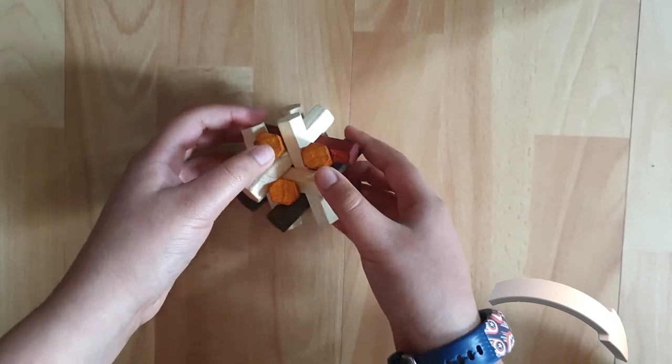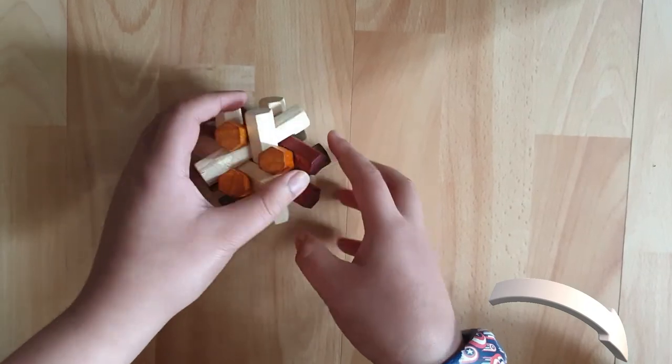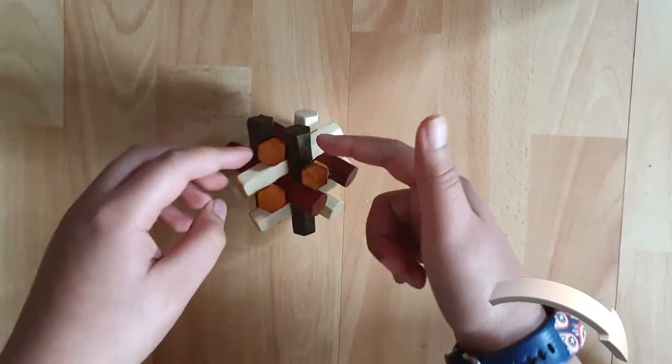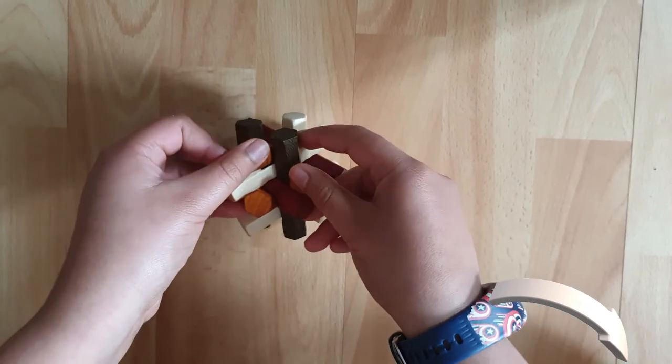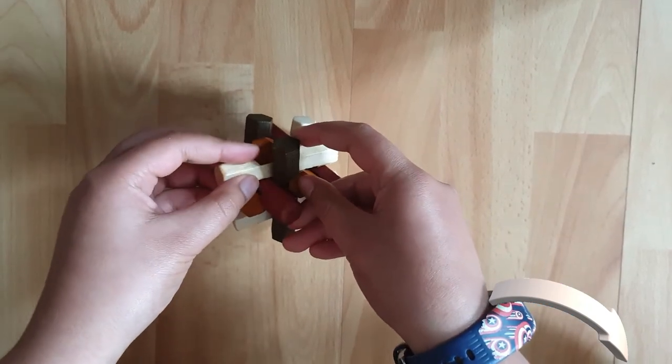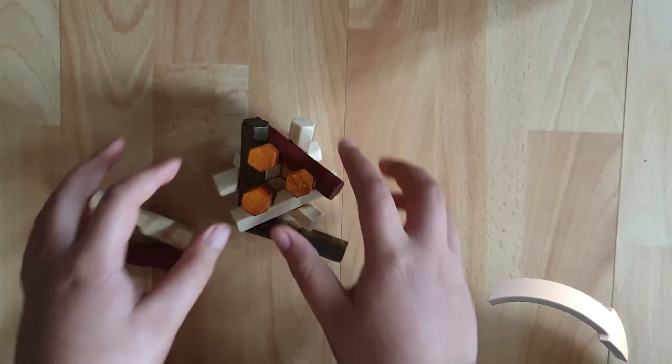And one more thing, if you want to undo it then take the last three that you put in and just pull those three out. So pull those three out and there you go. And then you can just pull apart the rest and it's unsolved again.